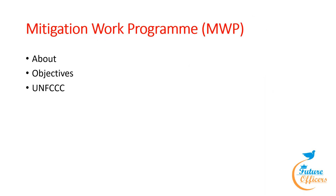Our next topic is the Mitigation Work Program. The Mitigation Work Program, that is MWP, is the process established by the United Nations Framework Convention on Climate Change, that is UNFCCC, to help countries scale up their mitigation ambition and implementation to achieve the 1.5 degree Celsius goal of the Paris Agreement. The objectives of the MWP are: